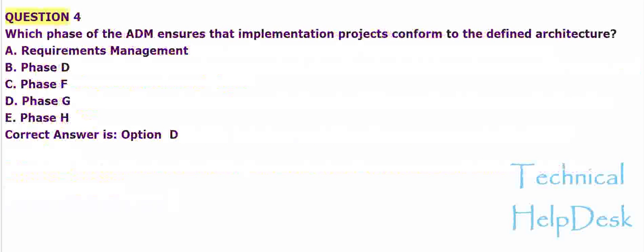Question 4. Which phase of the ADM ensures that implementation projects conform to the defined architecture? A. Requirements Management. B. Phase D. C. Phase F. D. Phase G. E. Phase H. Correct answer is Option D.